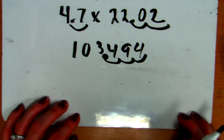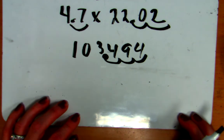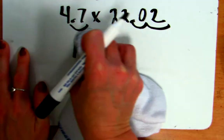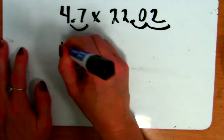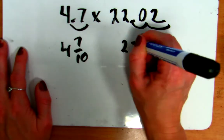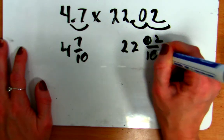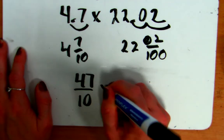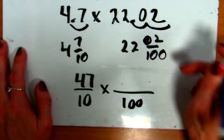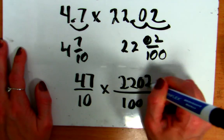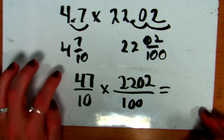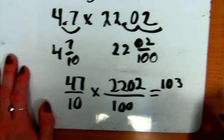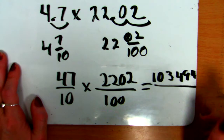Now, why does this method of counting the decimal points work? Well, it has to do with the fractions that we have here. If I rewrote these numbers as fractions, this would be 4 and 7 tenths. And this would be 22 and 2 one hundredths. So, what if I wrote those as improper fractions? Well, that would be 47 tenths times 2,202 over 100. I already know what 47 times 2,202 is. It's 103494.